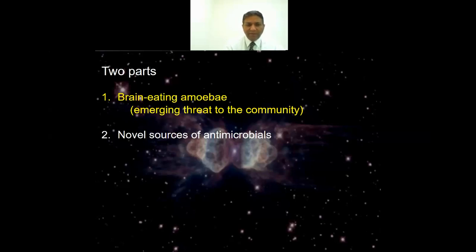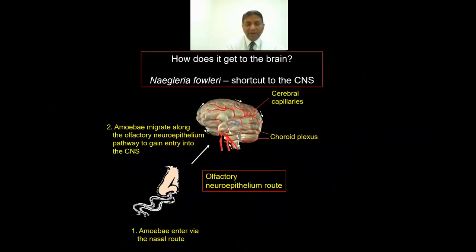Focusing on brain-eating amoeba — what is it? It is basically a parasite which gets into the brain of humans and causes death. The unfortunate thing is that if you get this parasite, the mortality rate is almost 100%. That means the patient will die even with treatment and antibiotics, because there is no effective mechanism to treat this parasite.